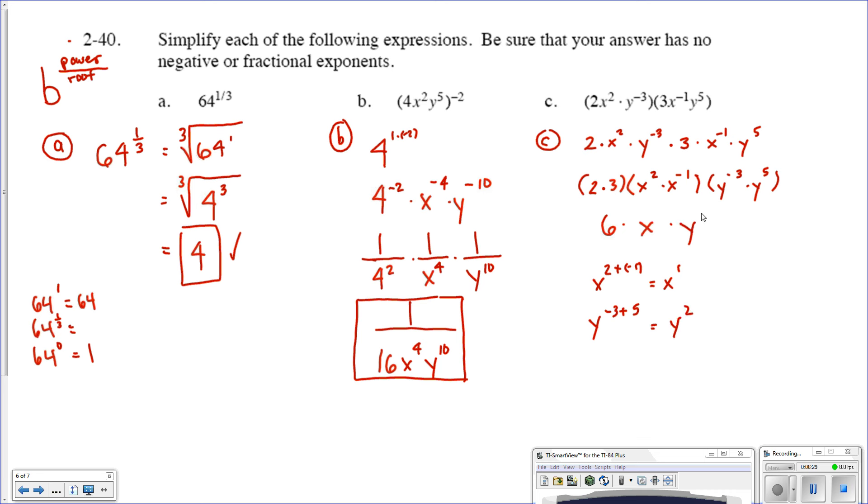We have y squared there. And when we put it all together, we get 6xy squared. And that's the answer for C. If you have additional questions on that, make sure you ask your teacher. Otherwise, this is problem 2-40. Hope that helped. Thanks for watching.